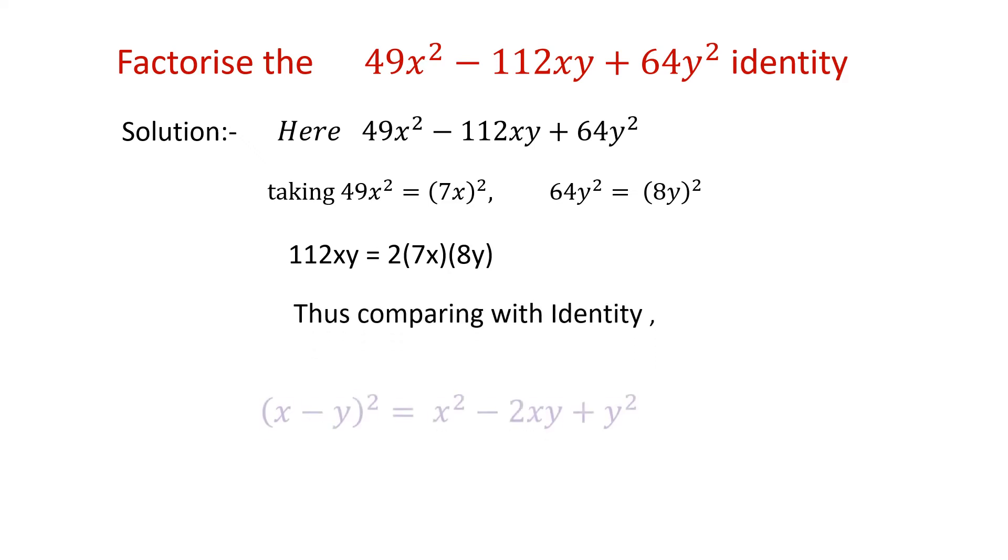Now comparing with the identity x minus y whole square is equal to x square minus 2xy plus y square. Here we have to recall this formula. Then we have to implement this formula and get the factors very easily.